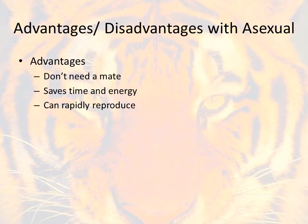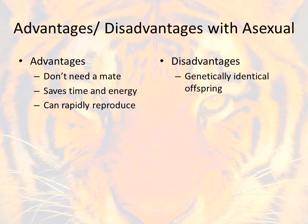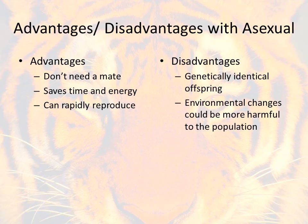They can also reproduce very rapidly. Something like a starfish — you might be able to cut off two ends and get new starfish to develop very quickly. Some of the disadvantages are that it produces genetically identical offspring, meaning whatever the DNA in one is, is going to be the same in the others. If there's some sort of an environmental change, that's going to be more harmful to the population because they're all going to be similar — if it affects one, it will affect all of them the same way.